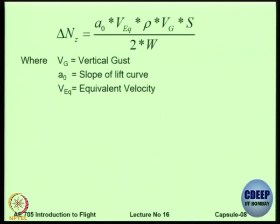The delta alpha will give you delta CL or delta L which will be equal to the lift curve slope DCL by D alpha into the alpha. That delta alpha will give you delta L which is equal to delta alpha into DCL by D alpha. That is why we have got delta NZ is equal to lift curve slope A0 V equivalent into rho into gust speed which is the vertical speed into area upon 2 W.